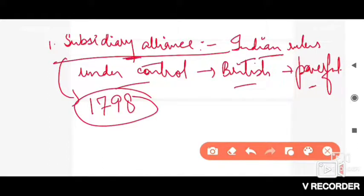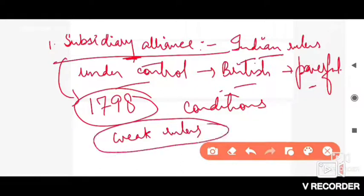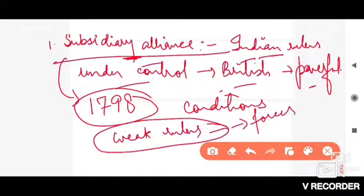In this Subsidiary Alliance, the Britishers would put certain conditions before weak rulers. They would first attack weak rulers and tell them: you are weak, your forces and your kingdom are very weak, so you need help. The first condition was that they had to disperse their military forces, so that no foreign or local invasion could occur.